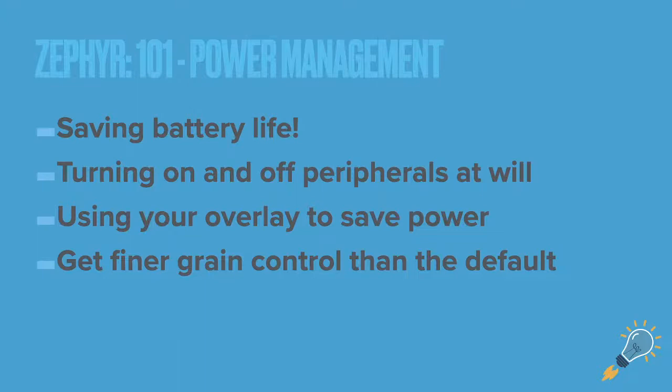We're going to be focusing mainly on the UART module for the nRF9160, as that one has some implementations that Nordic did to handle power states and also turning off the receiver, which actually saves around 1mA — which is huge for low power applications. We'll also be talking about the overlay and getting finer-grained control using the power management module.